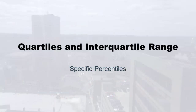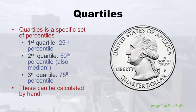Now we're going to talk about quartiles and also the interquartile range — remember the 'tile' thing, so this relates to percentiles. Quartiles are a specific set of percentiles. There are technically four quartiles, but the top one doesn't count because it would be 100% and percentiles only go up to 99. So we calculate the first, second, and third quartile: the 25th percentile is the first quartile, the 50th percentile — also known as the median — is the second quartile, and the third quartile is the 75th percentile.